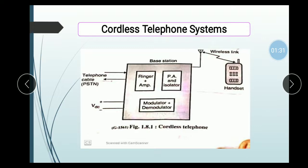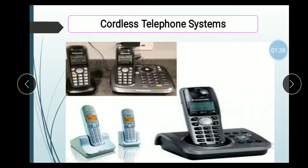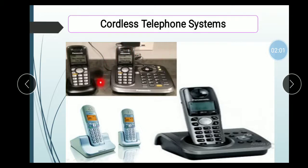The working of the Modulator and Demodulator is that it is used for less power and better quality. This is a second example of the Cordless Telephone System. Here we can see the Base Station and the Portable Handset. The Base Station is fixed — we cannot move it — and the second is the Handset, which is movable. The Base Station has a wire attached, which is our Cable, PSD, and Wire.